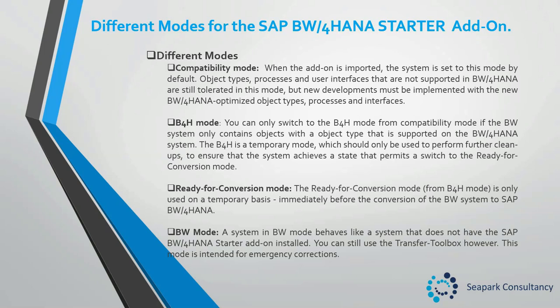The next mode is B4H mode. You can only switch to B4H mode from compatibility mode if the BW system only contains objects with an object type that is supported on the BW4HANA system. The B4H mode is a temporary mode, which should only be used to perform further cleanups to ensure that the system achieves a state that permits a switch to the ready for conversion mode.